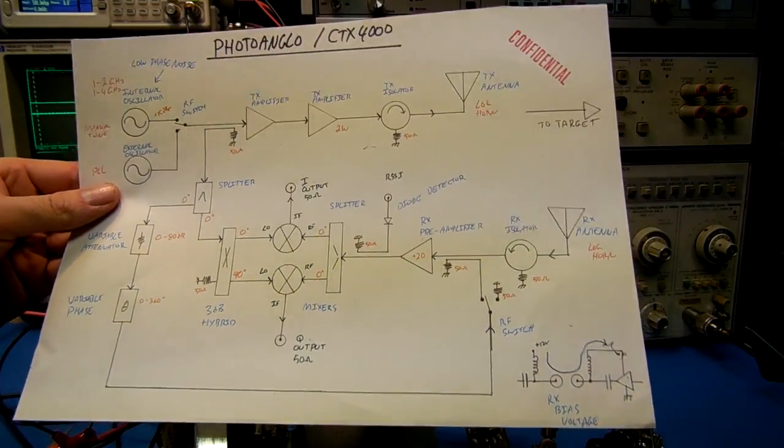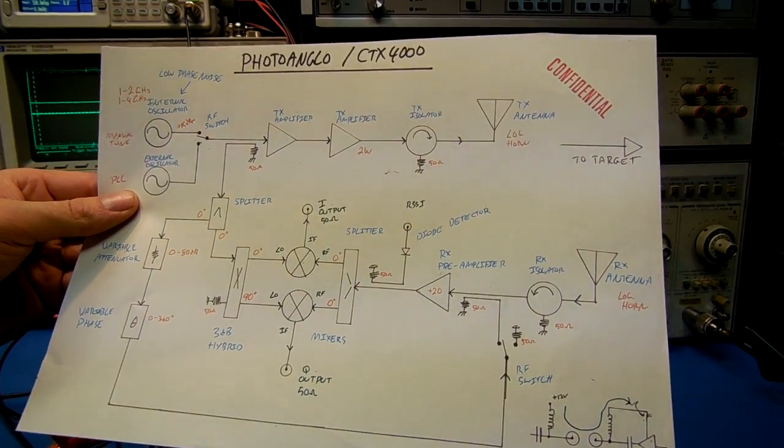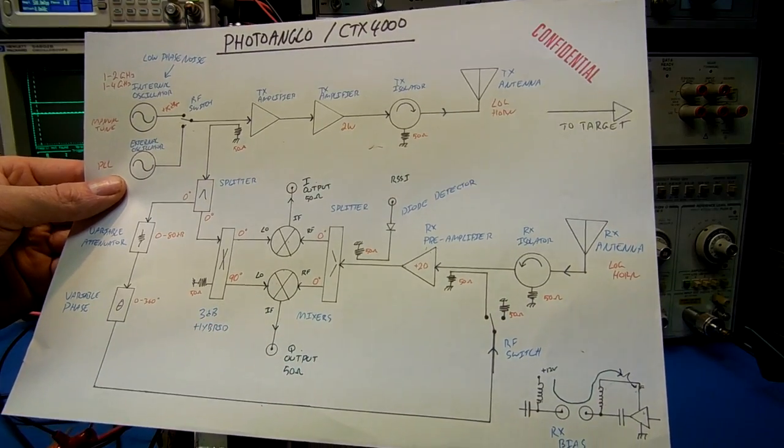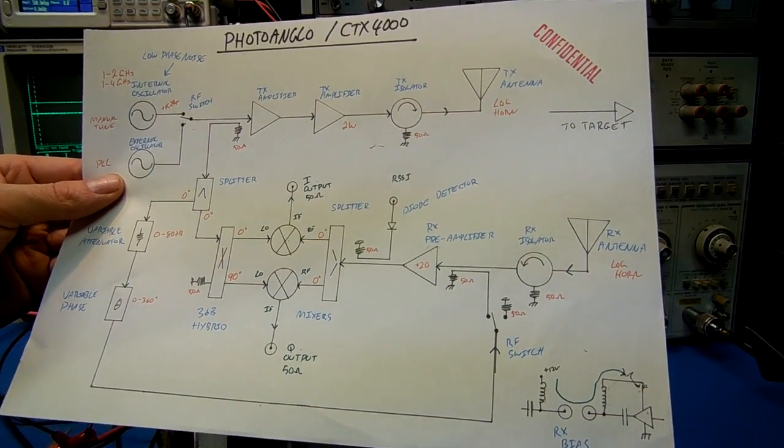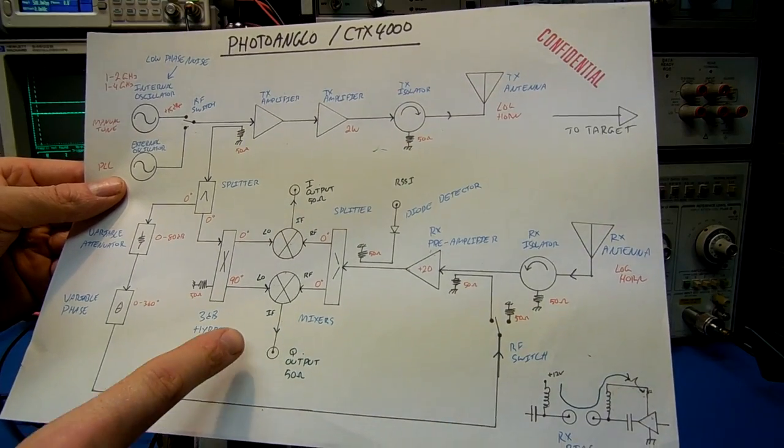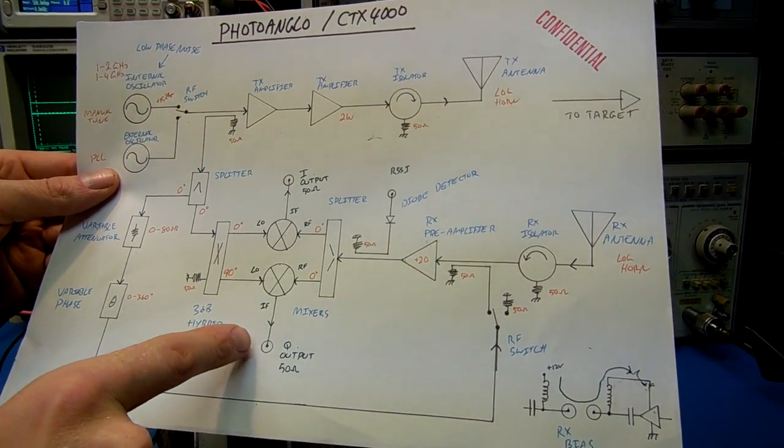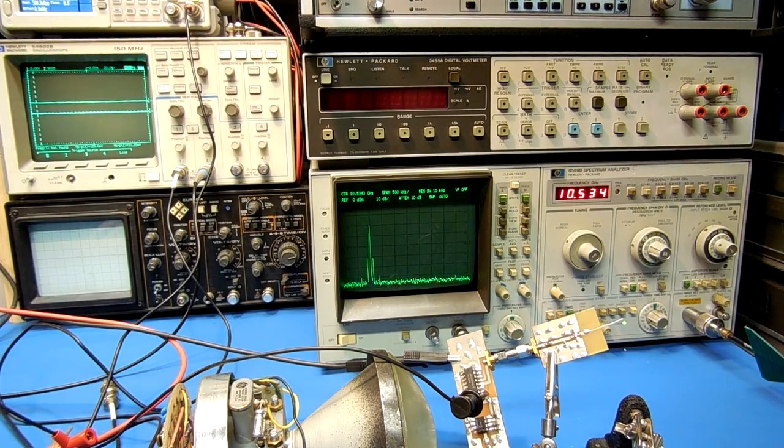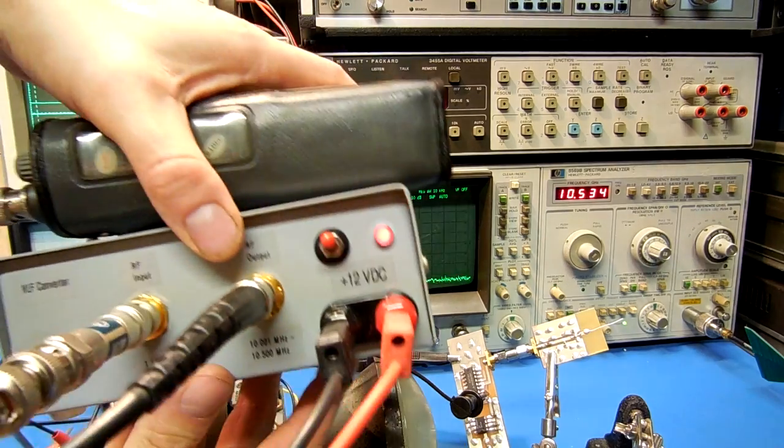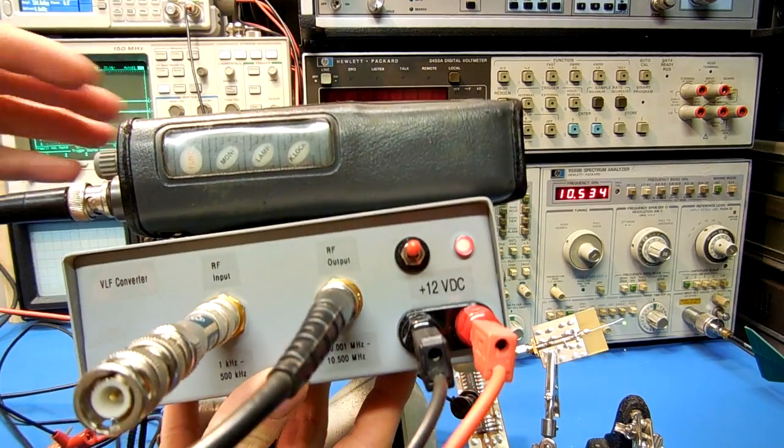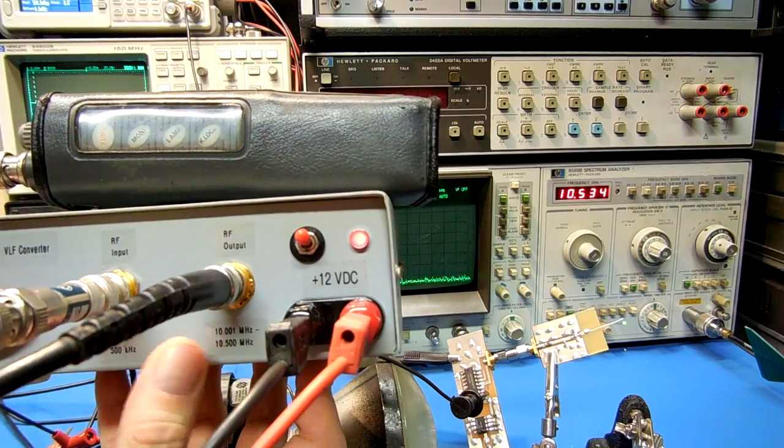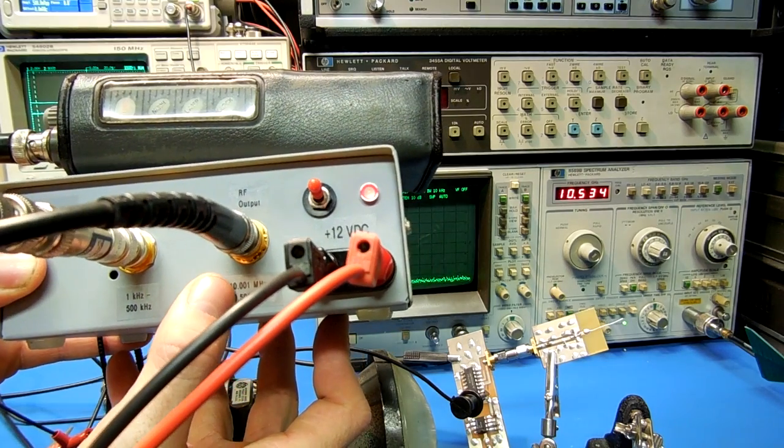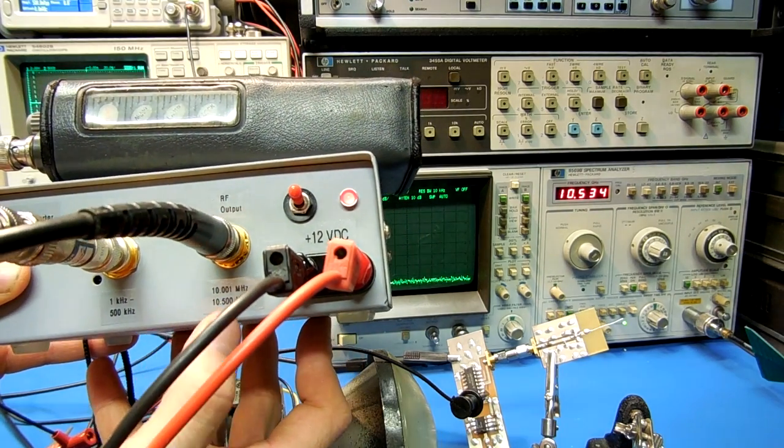Here's a block diagram of the CTX-4000 radar unit. If you don't have a spectrum analyzer to directly receive the backscattered signal, it's possible to take one of these outputs, the IRQ output, from the radar unit. I have a VLF converter that converts 1 kHz to 500 kHz up to 10.001 MHz to 10.5 MHz.